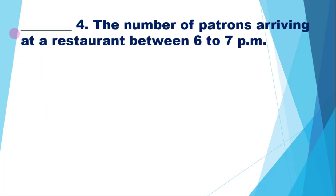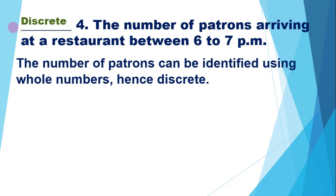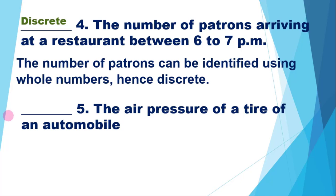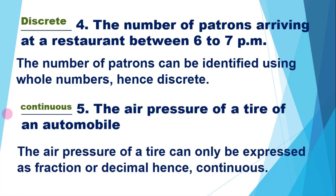For number 4, the number of patrons arriving at a restaurant between 6 to 7 p.m. — patrons are customers. We can count them; the number of patrons can be identified using whole numbers. Hence, discrete. For number 5, the air pressure of a tire of an automobile — we can measure air pressure using an instrument, and it can be expressed as a fraction or decimal. Hence, it is a continuous random variable.